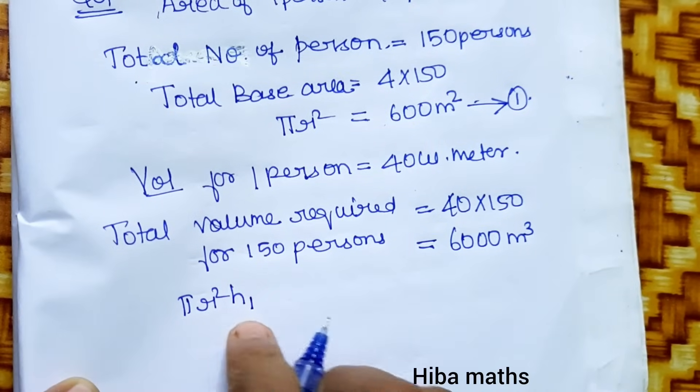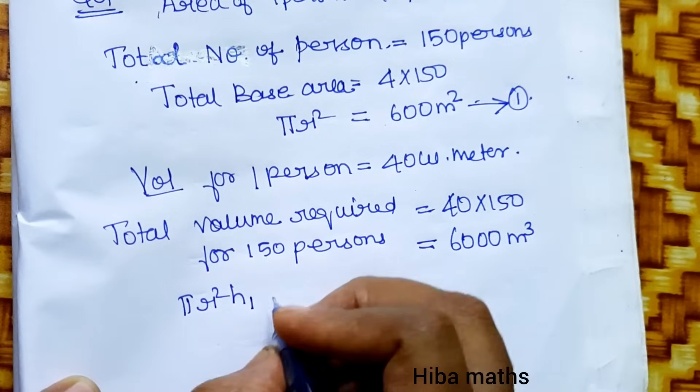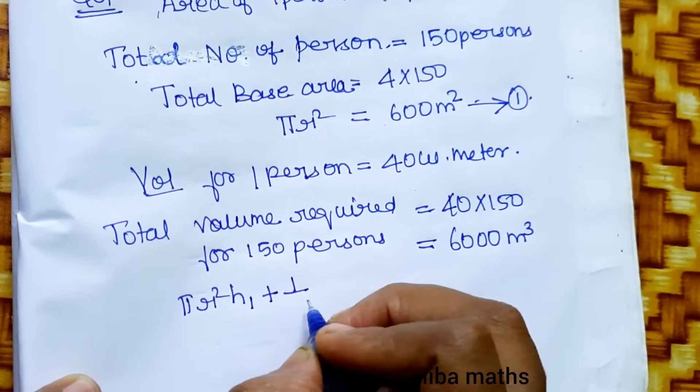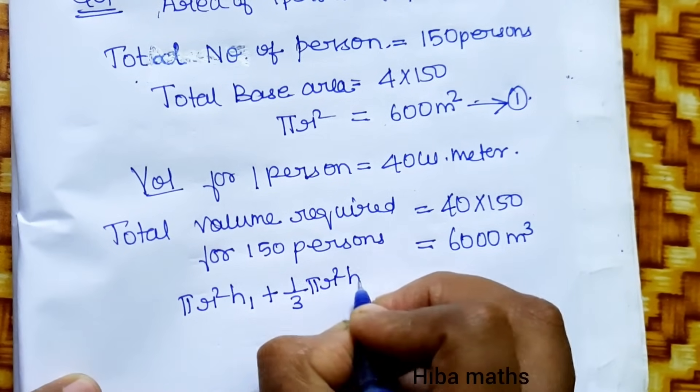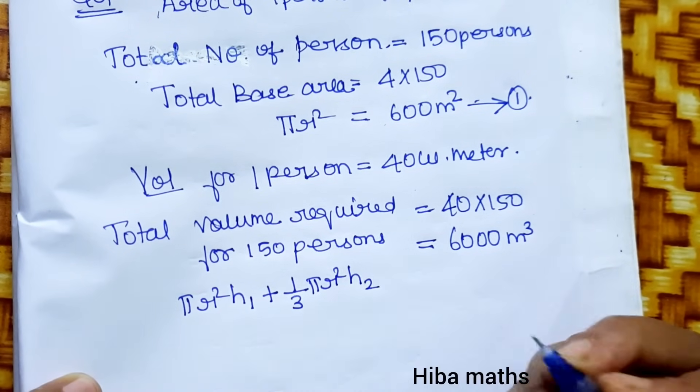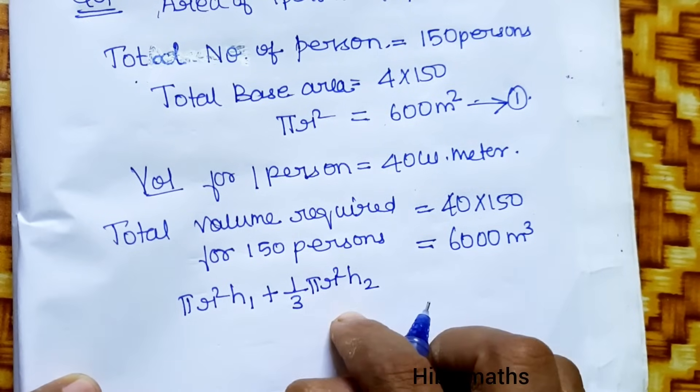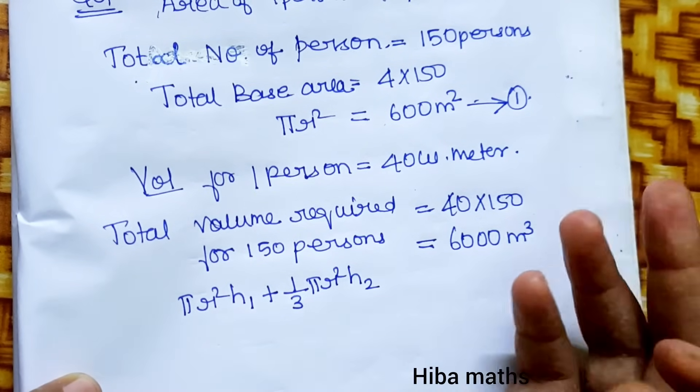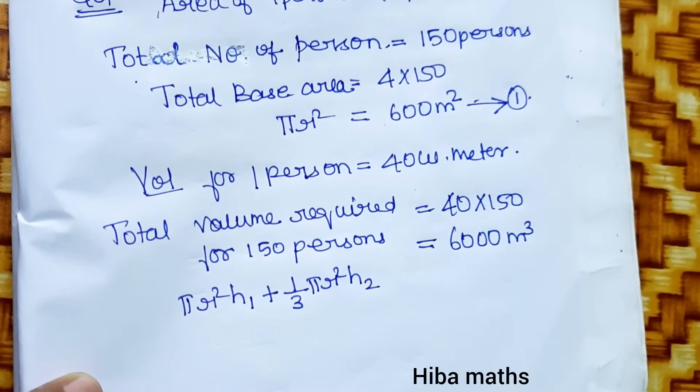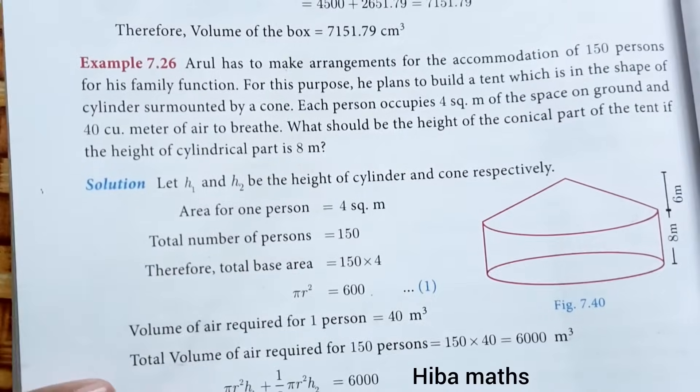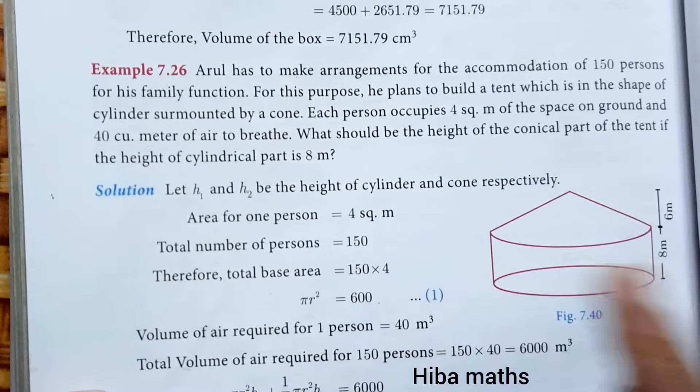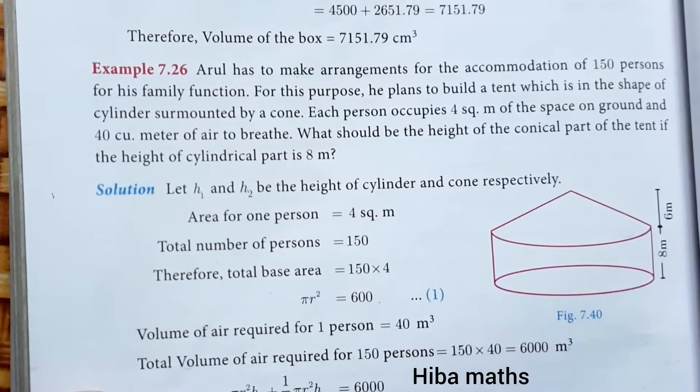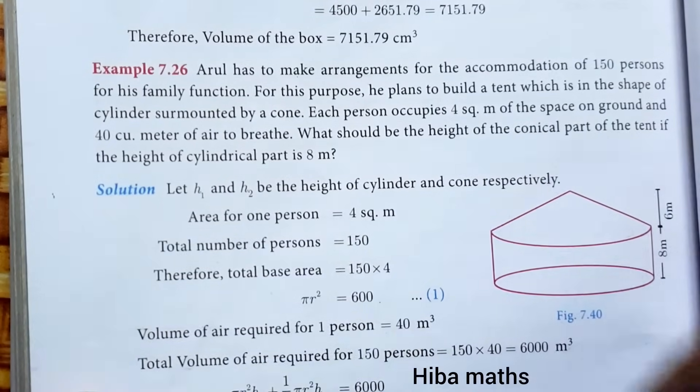Let h1 and h2 be the height of the cylinder and cone respectively. Volume of cylinder is πr²h1, and volume of cone is (1/3)πr²h2.